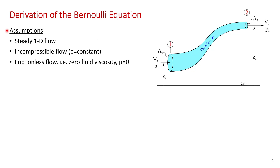The assumptions in Bernoulli's equation are steady one-dimensional flow, so the velocity across the pipe or stream tube is constant at any point. Also, the flow is considered to be incompressible, so the density is constant even though the pressure changes throughout the flow. Also, Bernoulli's equation approximates the flow as frictionless, so the flow is assumed to have no viscosity. In fluid dynamics, this is called an inviscid flow. Recall that viscosity is like fluid friction, so this assumption is equivalent to saying there are no energy losses as the flow goes from one to two.